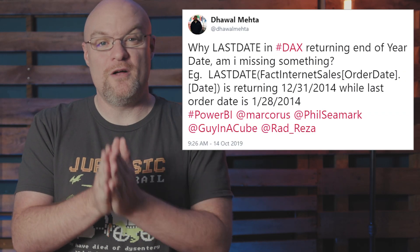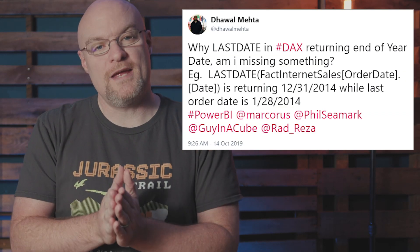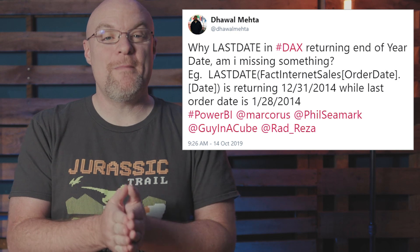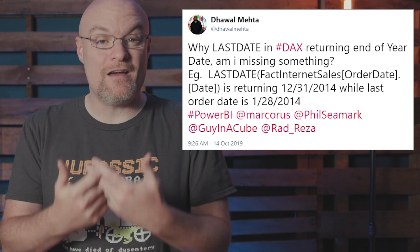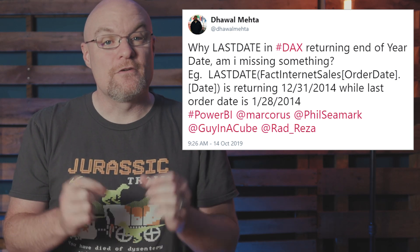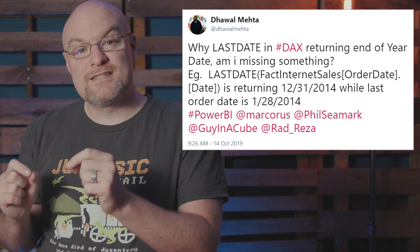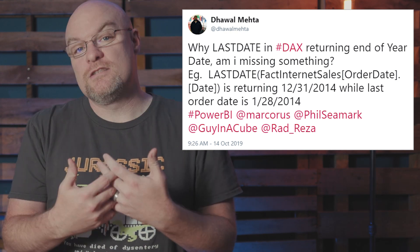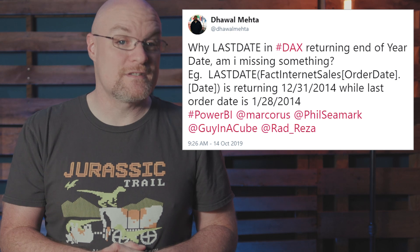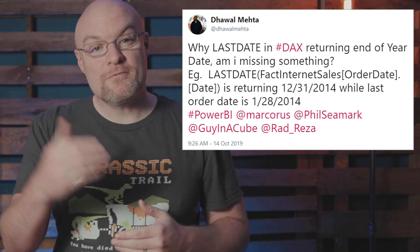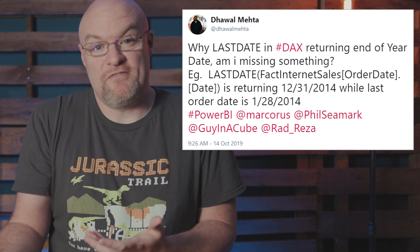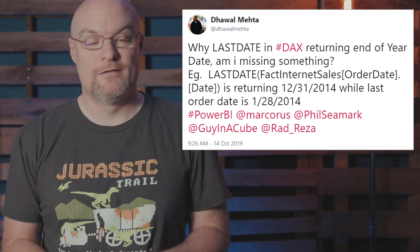This all started with a tweet from Dwal Mehta — sorry if I'm pronouncing your name wrong — where his tweet was all about why the LASTDATE DAX function was returning the end of the year, and was he missing something? He included a little DAX snippet, which for me was the clue. In general, he thought it should have returned some date in January, because that was the last date he thought was in his model, but it was returning December 31st instead at the end of that given year. So that's what we're diving into — let's head over to my laptop and take a look at what's going on.